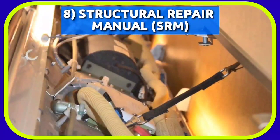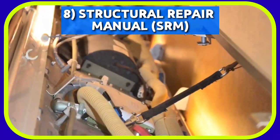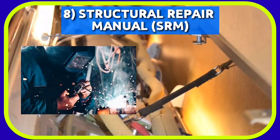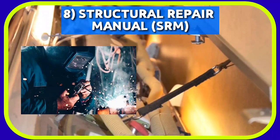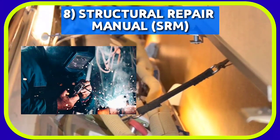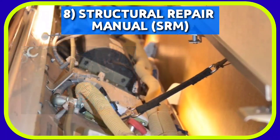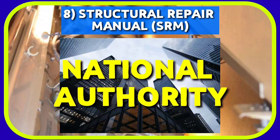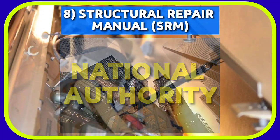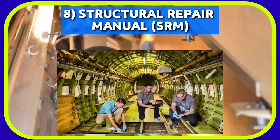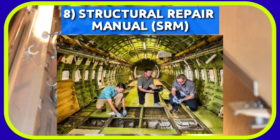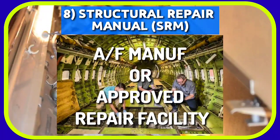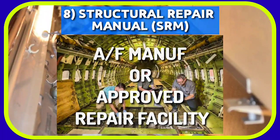Number 8: Structural Repair Manual, or SRM. The SRM provides the operator with information needed to carry out certain repairs of the aircraft structure. These repairs are simple and are approved by the national authority for operator completion. Other structural repairs must be done by the airframe manufacturer or an approved repair facility.